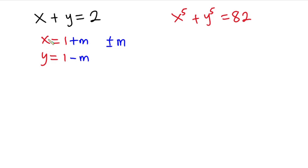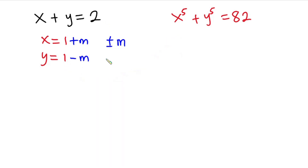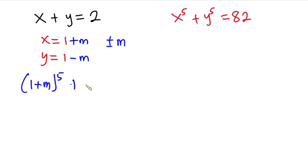Now I'm going to substitute these equations into x⁵ + y⁵ = 82. Wherever I see x I'll put 1 plus m, and wherever I see y I'll put 1 minus m. So we have (1 + m) to the fifth power, plus (1 − m) to the fifth power, and this should be equal to 82.